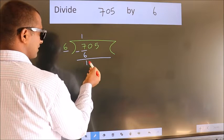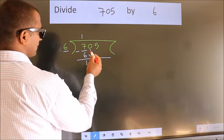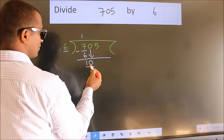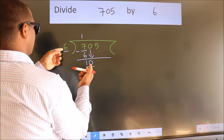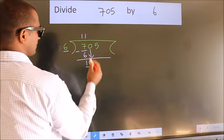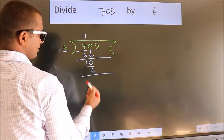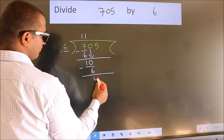After this, bring down the beside number. So 0 down. So 10. A number close to 10 in 6 table is 6 1s 6. Now we subtract. We get 4.